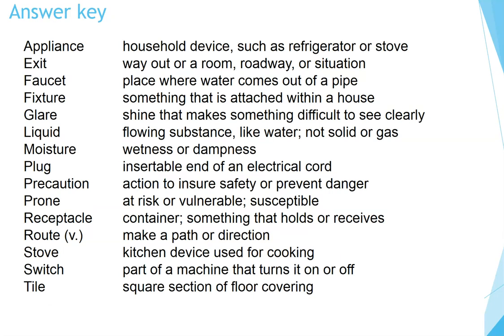Answer key. Appliance: household device, such as a refrigerator or stove. Exit: way out of a room, roadway or situation. Faucet: place where water comes out of a pipe. Fixture: something that is attached within a house. Glare: shine that makes something difficult to see clearly. Liquid: flowing substance, like water — not solid or gas. Moisture: wetness or dampness.